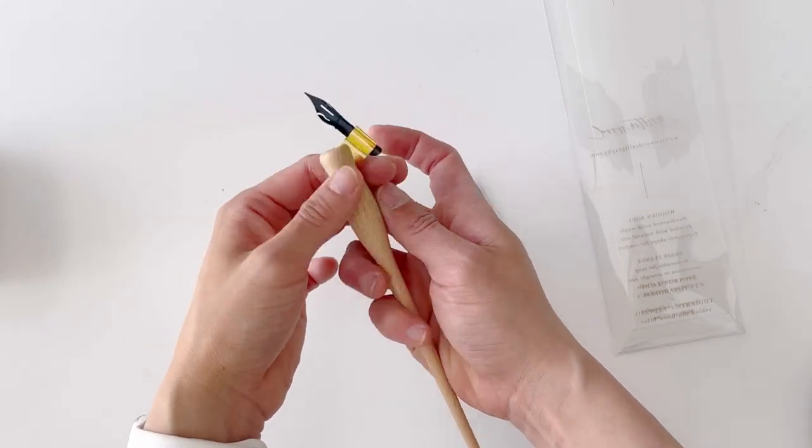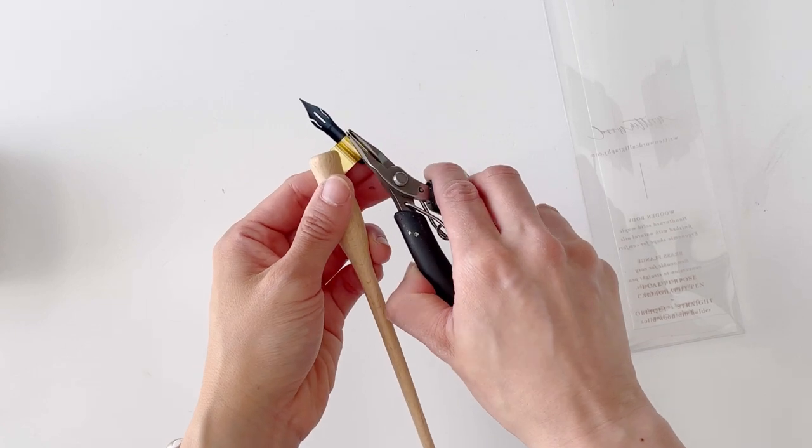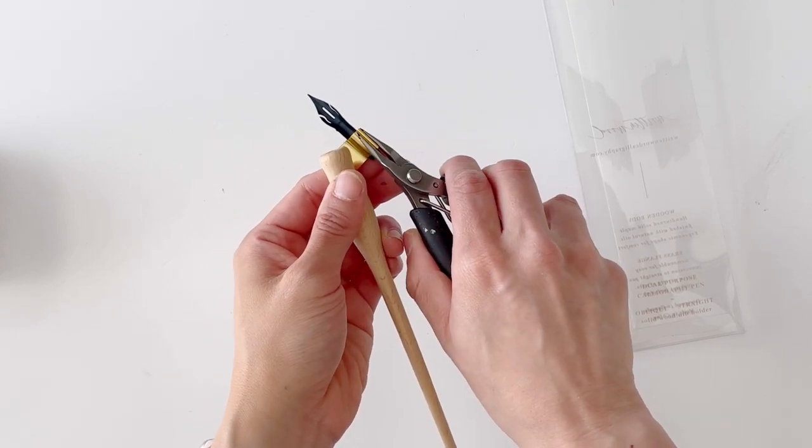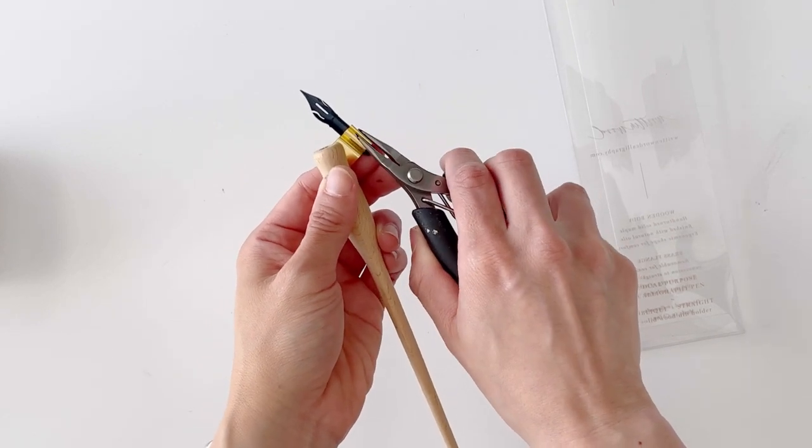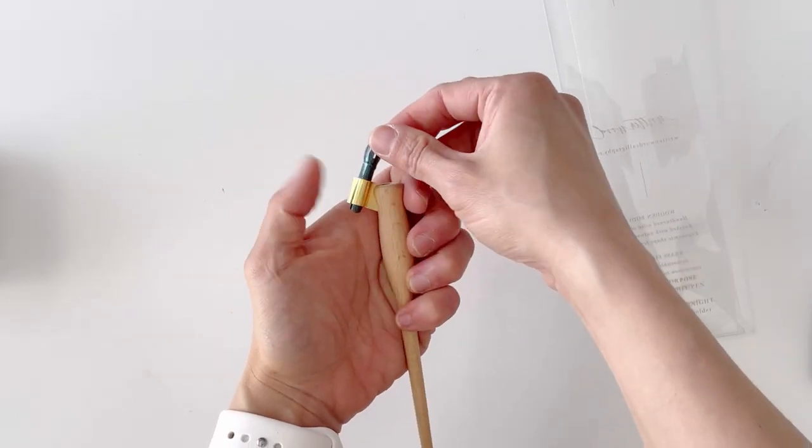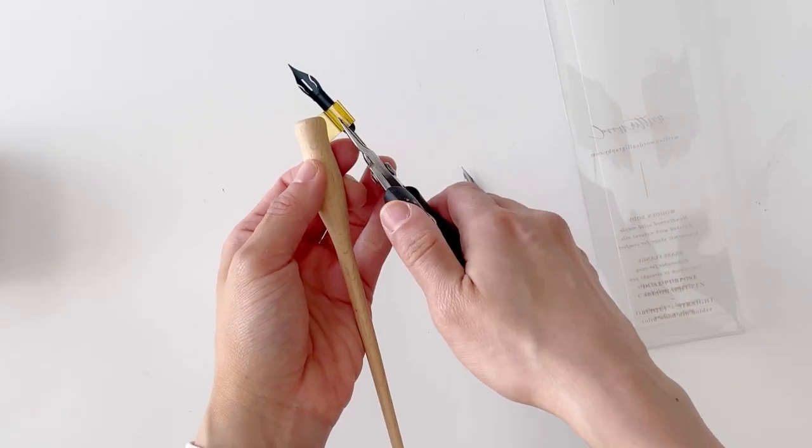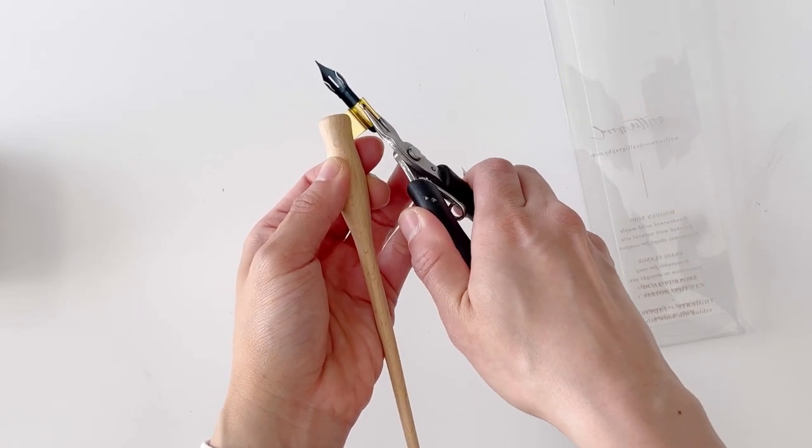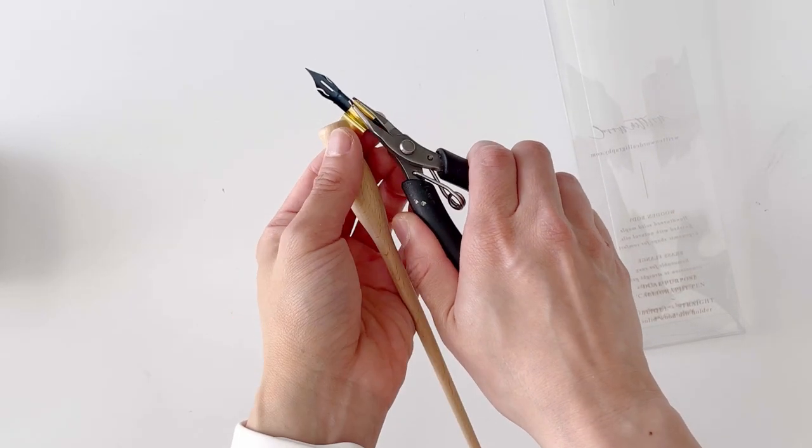If you find it's a little bit too loose, what I do is I actually flatten the part a little bit using a pair of pliers, or you can even use your fingers, and that will help tighten the nib here. You can tap the middle part here. Again, flatten it out.